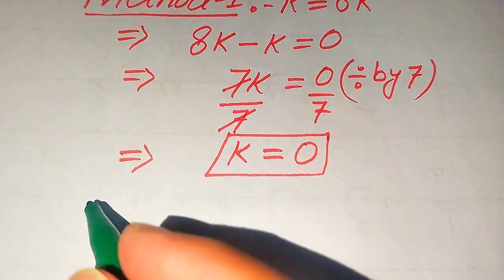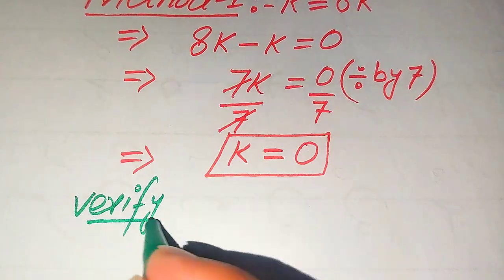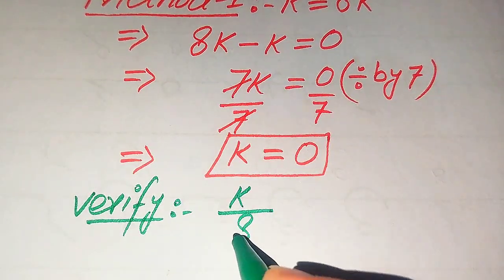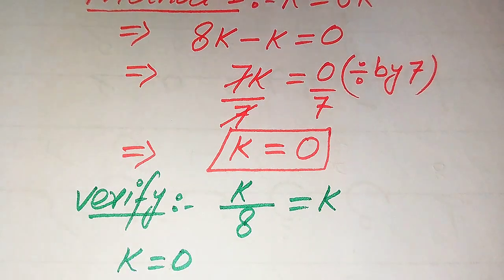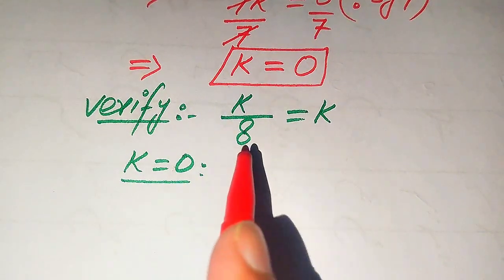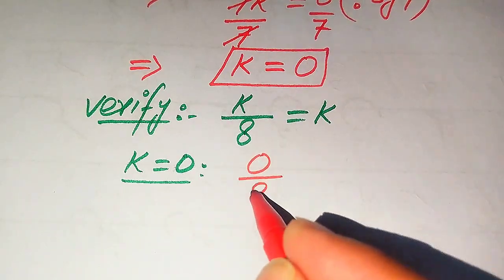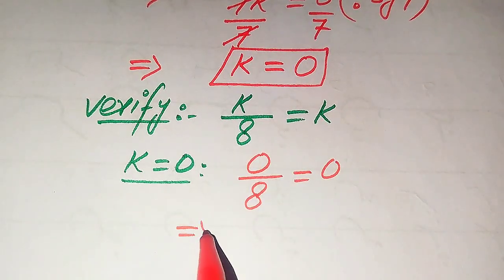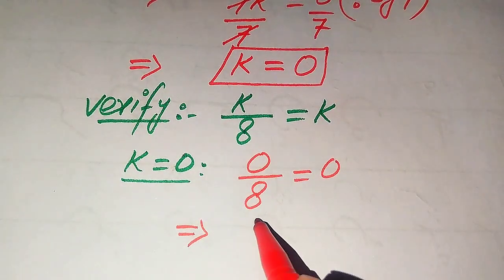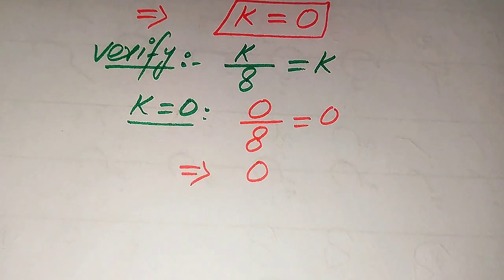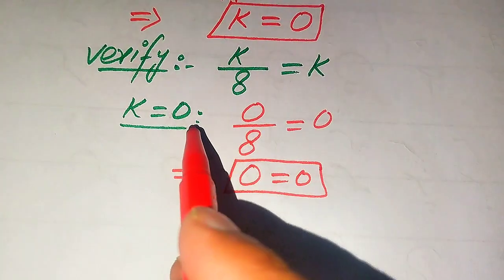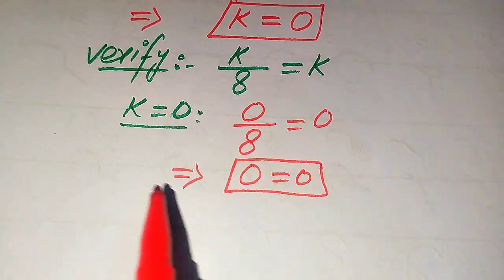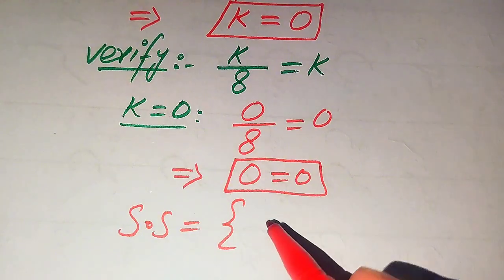Now we need to verify that this value of k satisfies our given equation or not. We copy down the given equation: k divided by 8 equals k. We substitute k equals 0 on both sides, and it becomes 0 divided by 8 equals 0. Since 0 divided by any number is always 0, we get 0 equals 0. This shows that both sides are equal, which means k equals 0 is satisfied. So k equals 0 is the solution of this question.